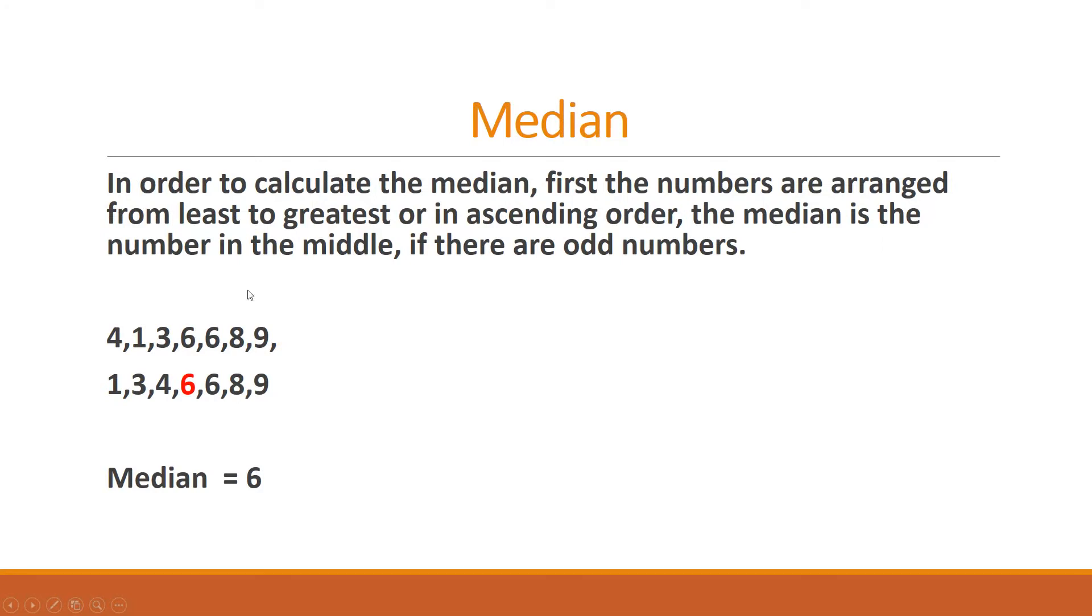Next is median. In order to calculate the median, first the numbers are arranged from least to greatest or in ascending order. The median is the number in the middle if there are odd numbers. You can also arrange the number in ascending or descending, the answer will be same.